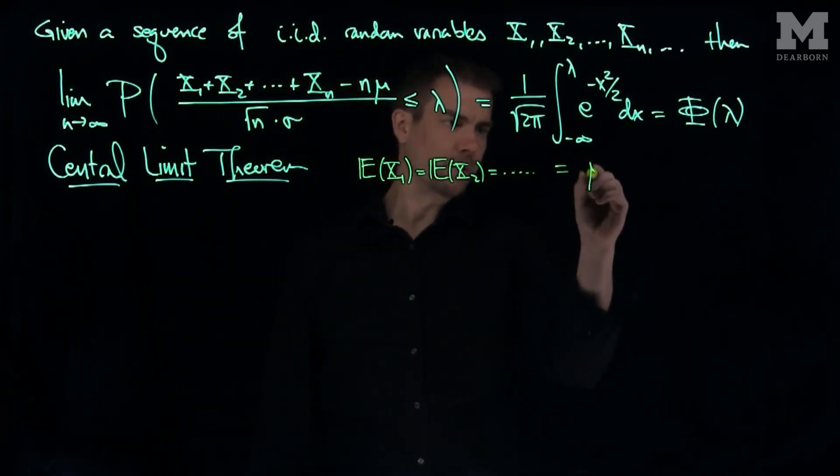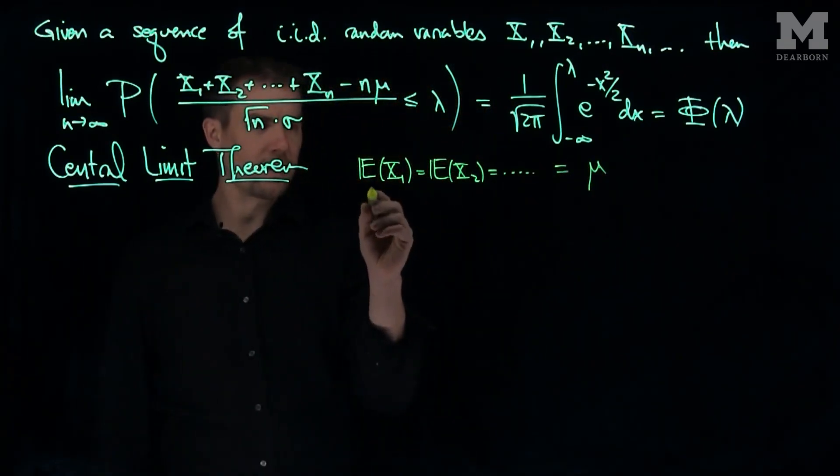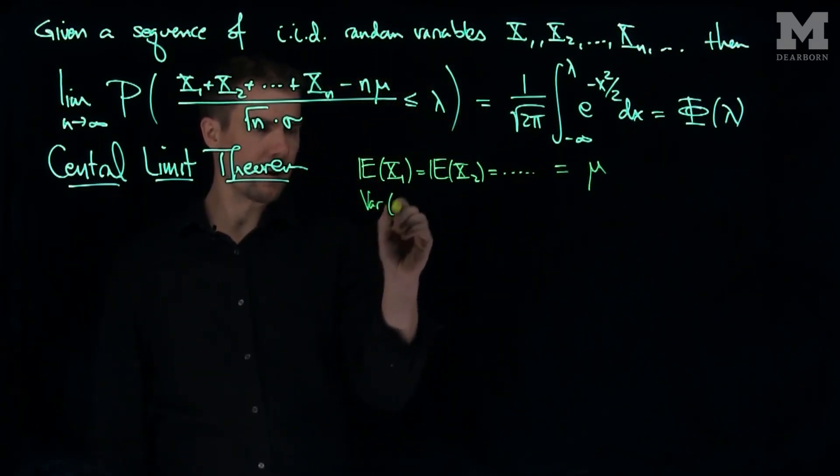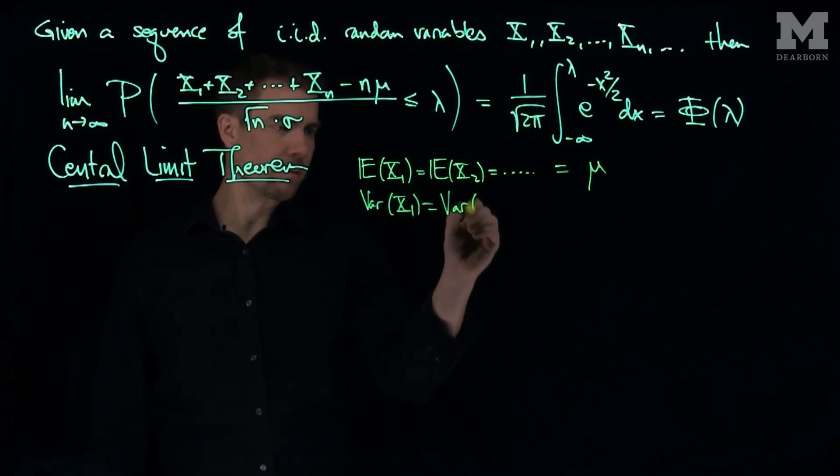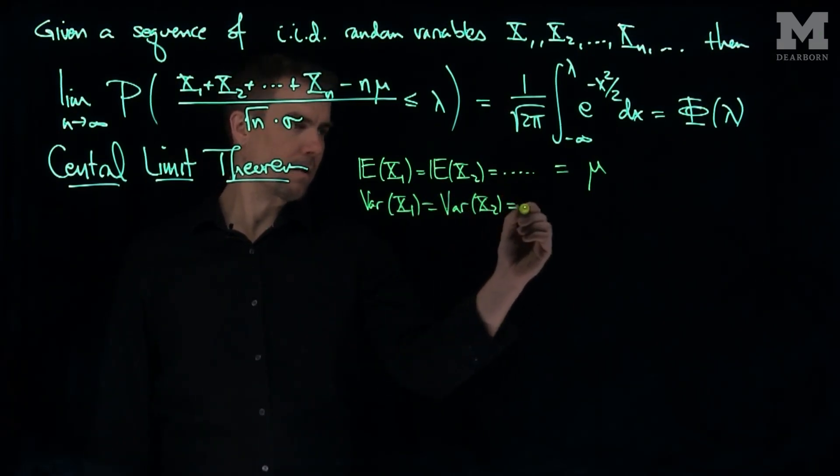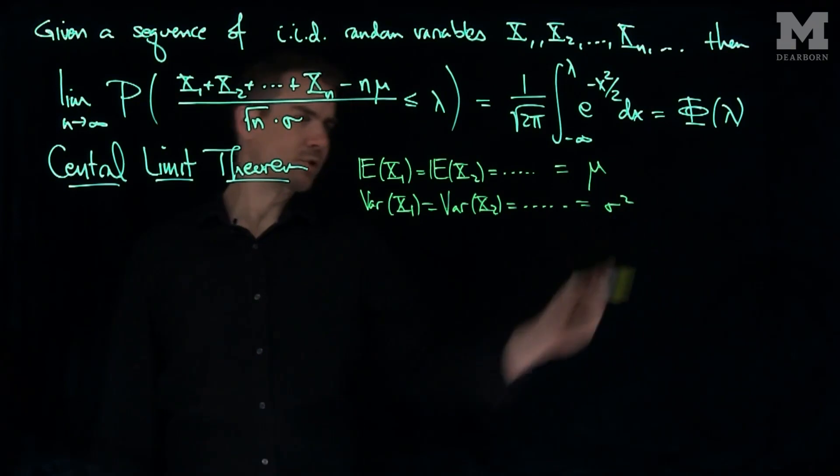And then the variance of x1 is the variance of x2, they're all the same and that's sigma squared.